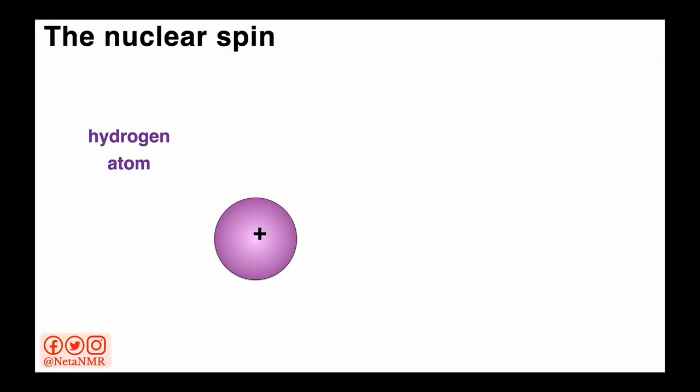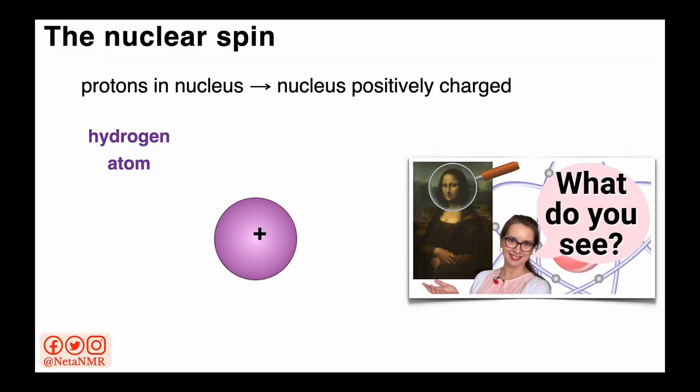Let's take a look at the hydrogen atom, for example. We've learned in a previous video, when we talked about the atomic structure, that the hydrogen atom has one proton in the nucleus. And since the proton is a positively charged particle, that means that the nucleus is positively charged.